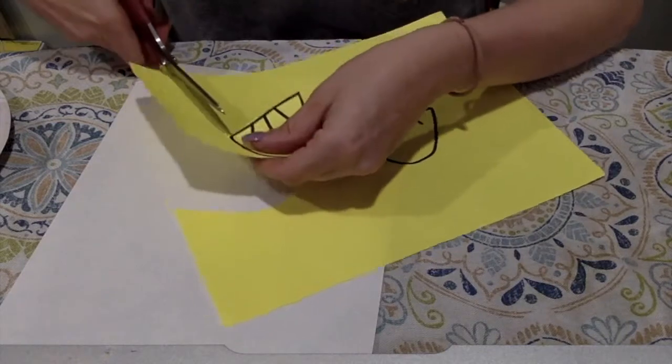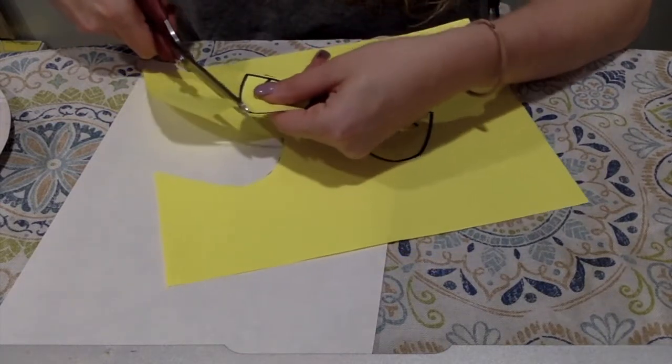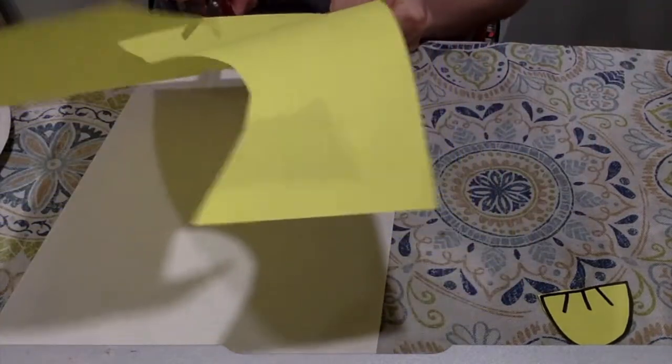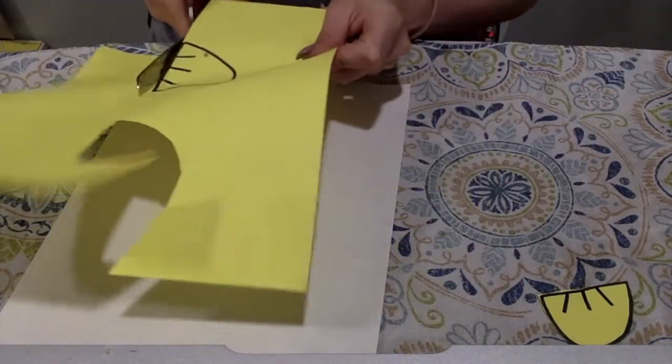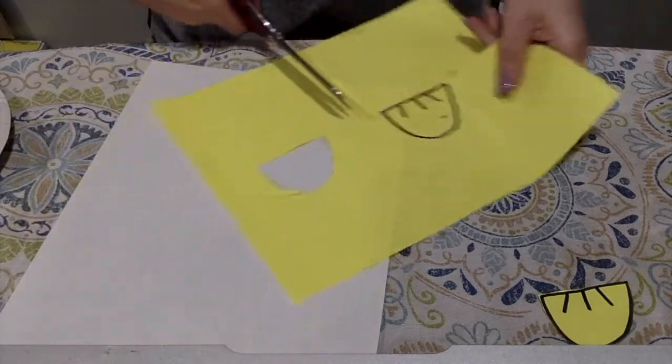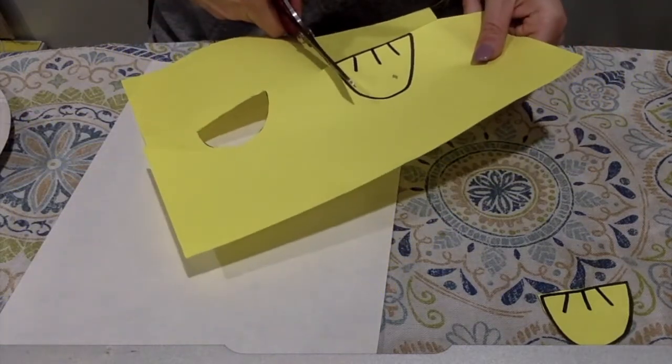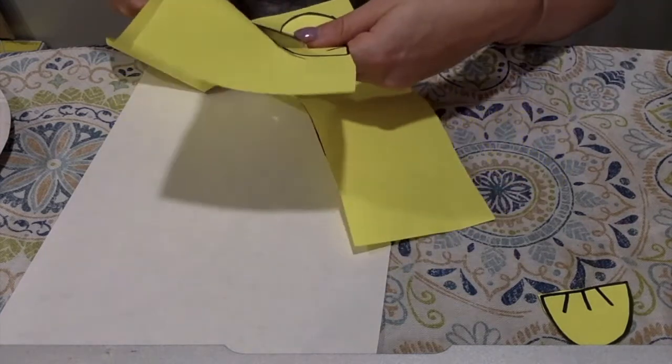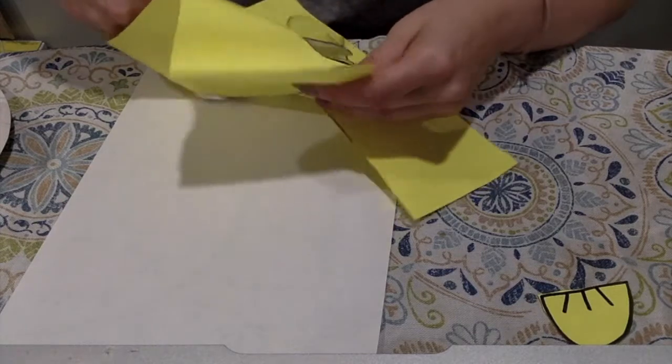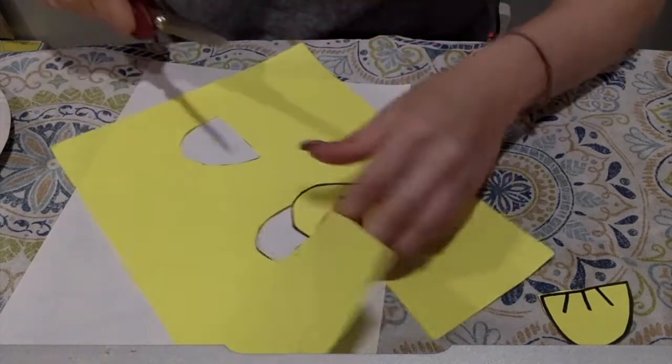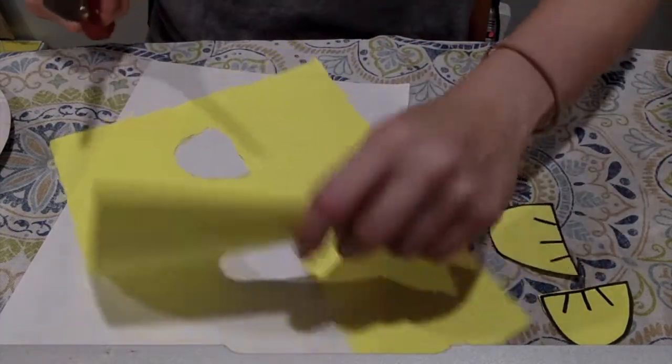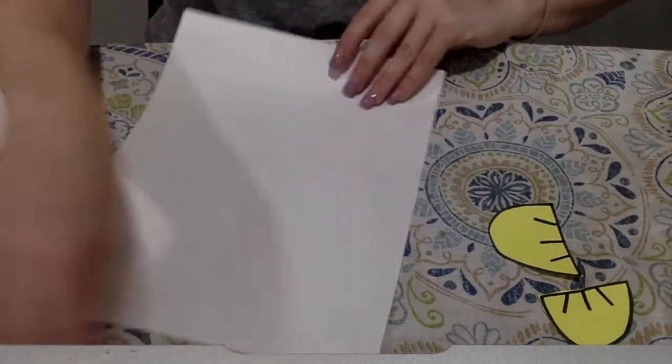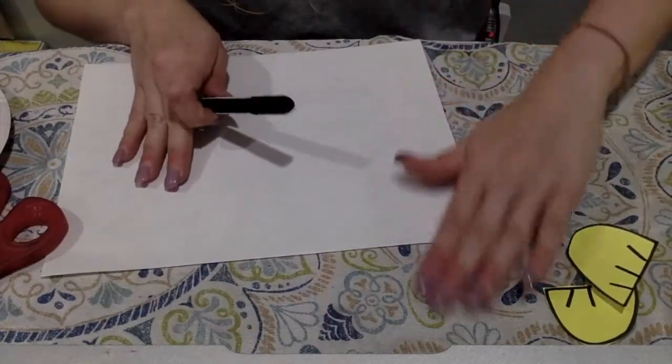Rotate the paper and we're still just snipping along the lines. So we have our two fins. So now we're all done with the yellow paper, that I can move along to my white paper.